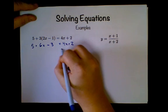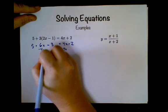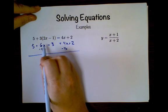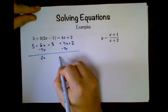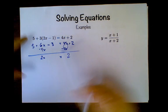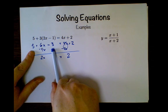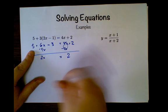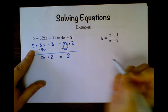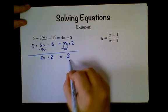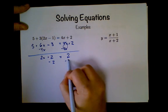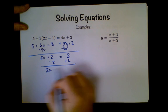Alright, take away 4x, take away 4x. Let's see, so that gives me 2x. And I'm also going to in the same fell swoop do 5 take away 3 is 2. So 2x plus 2 equals 2, which means that I'm going to take away 2 from both sides. 2x equals 0, divide both sides by 2, x equals 0.